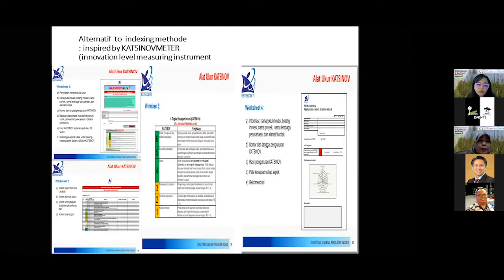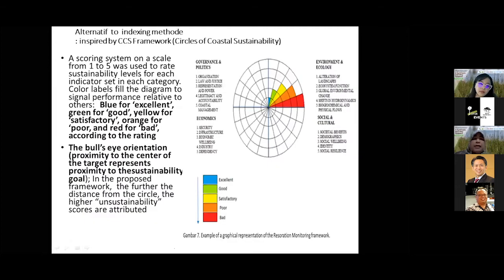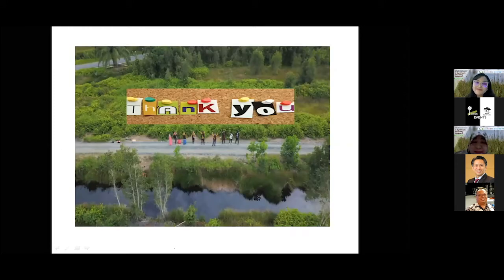The second inspiration is how we can adopt an assessment approach from evaluating innovation levels in research — where an application tool is made, evaluators input the available scales, and results with conclusions and recommendations are generated automatically. The third inspiration can be taken from the CCS framework, which uses graphs with a 1–5 scale for each indicator, with specific colors indicating performance levels, producing something like a spider web diagram showing weaknesses across ecology, economy, or other dimensions.